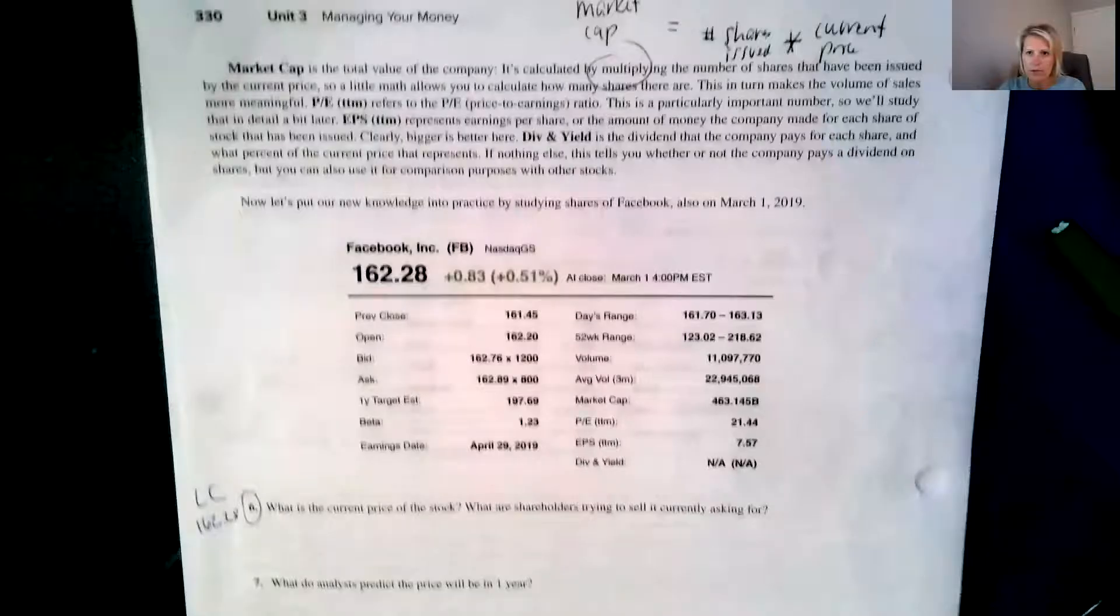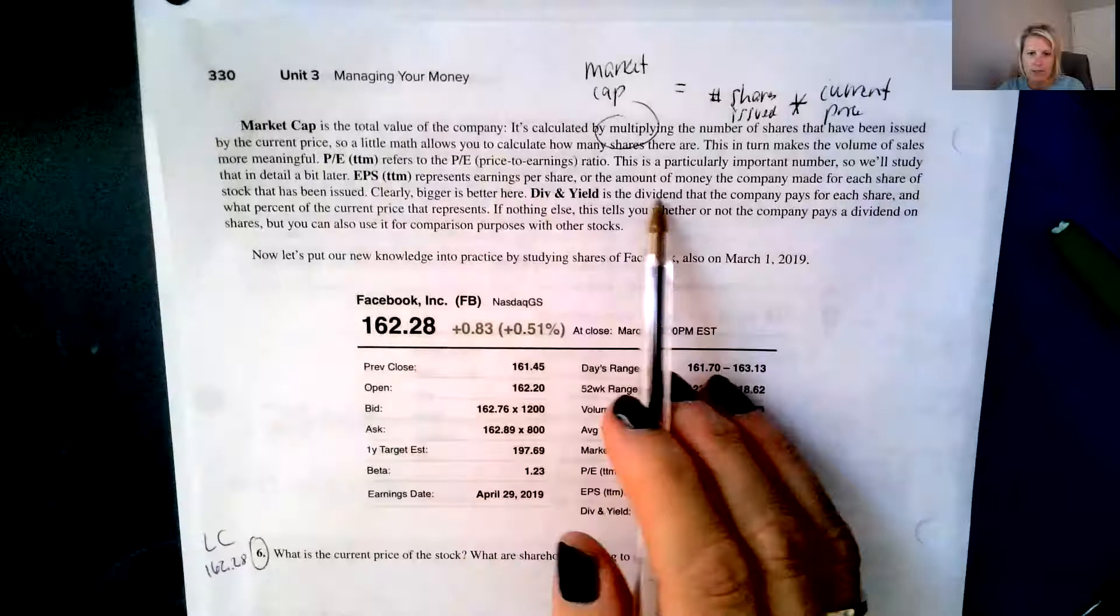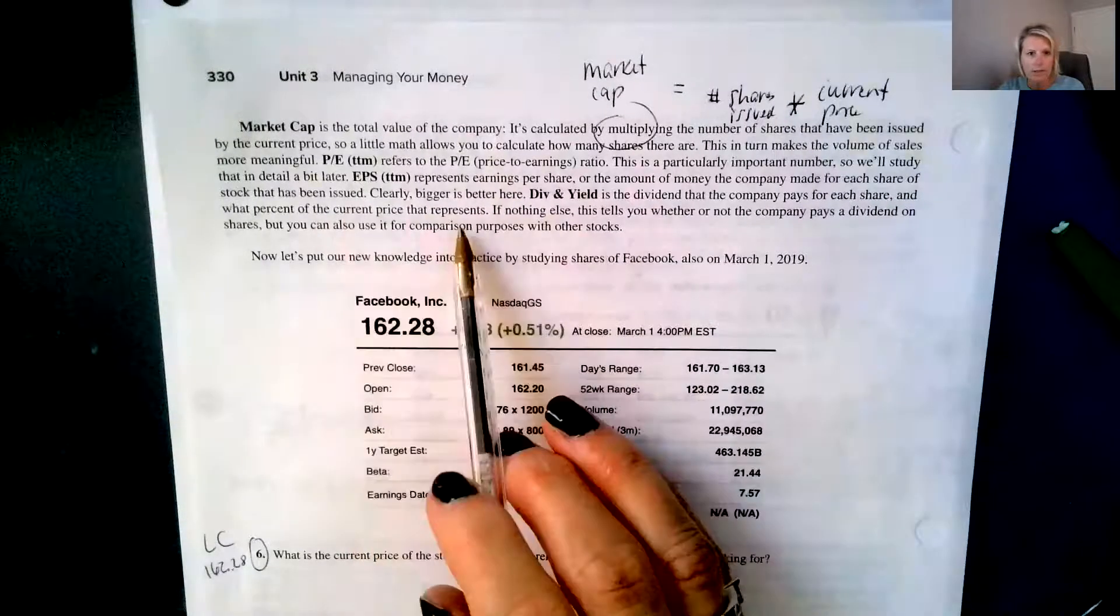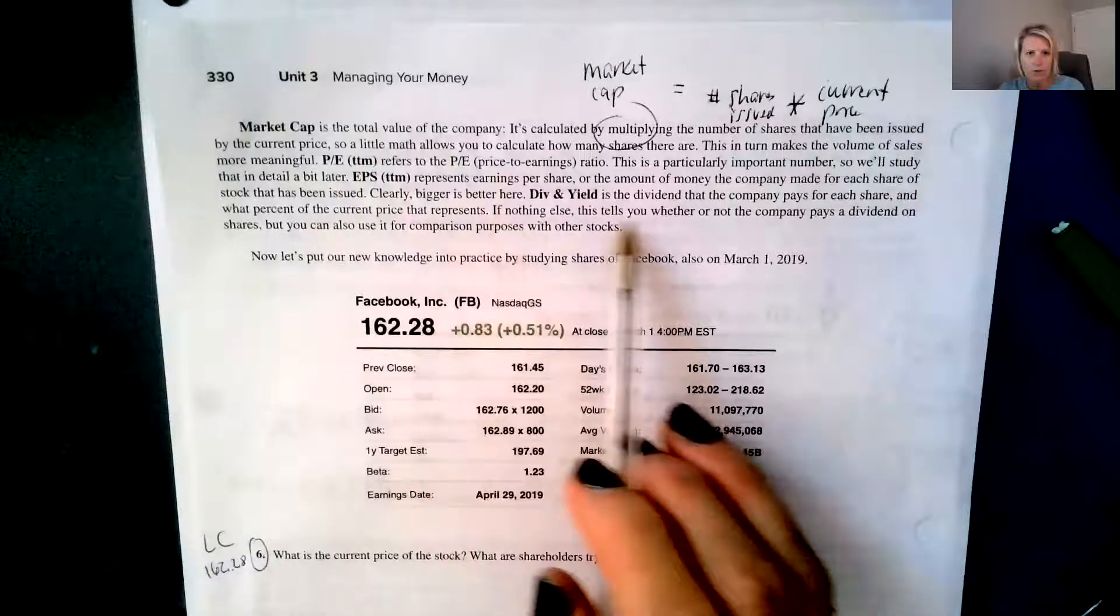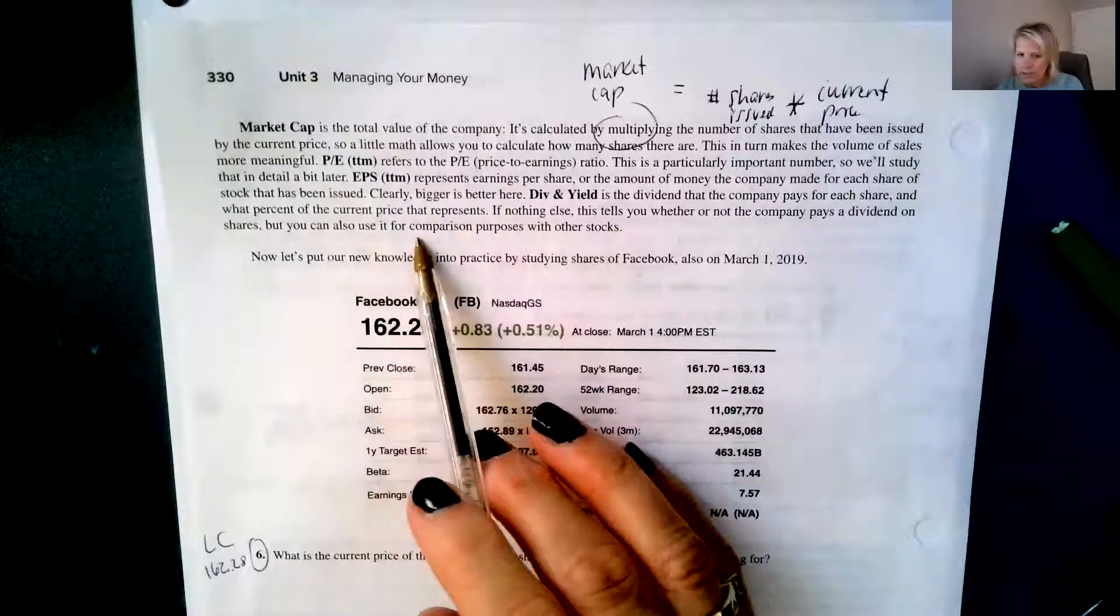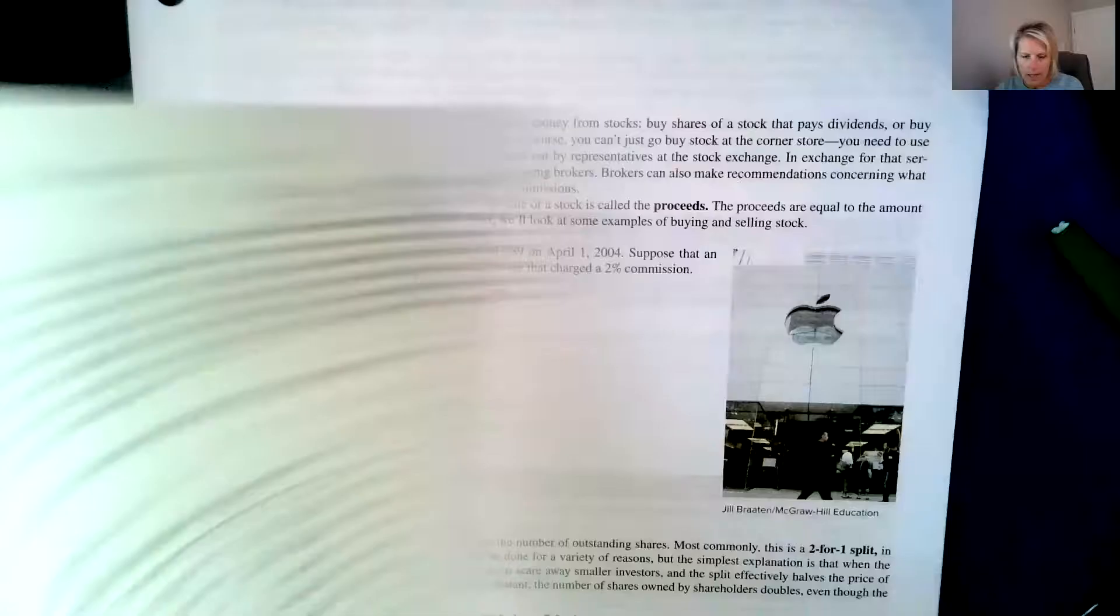And then we have our dividend and yield is the dividend that the company pays for each share and what percent of the current price that represents. If nothing else, this tells you whether or not the company pays a dividend on shares, but you can also use it for comparison purposes with other stocks. So this Acme one that we're looking at, they paid for every share that you own, they paid 48 cents.